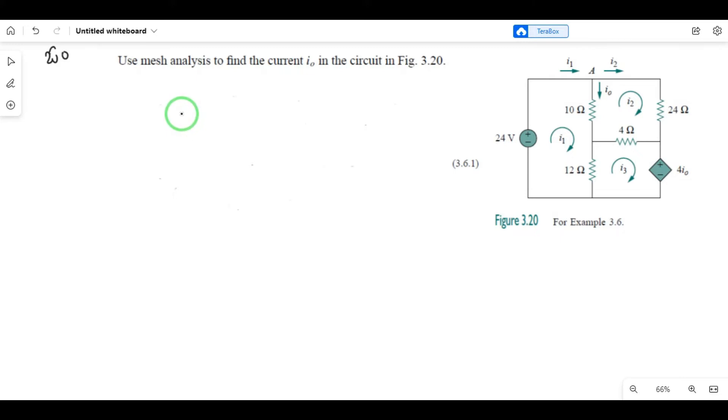First step: identify the number of meshes. There are three meshes here. Second step: write the mesh equations by applying KVL to each mesh. So we need to write three equations. First, apply KVL to mesh 1.